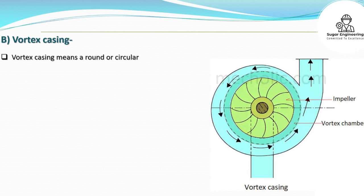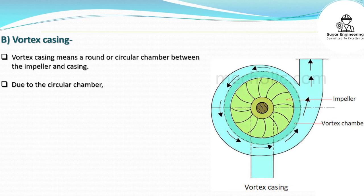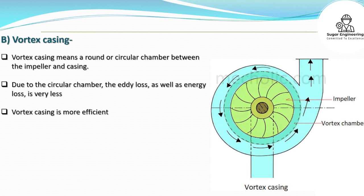B. Vortex casing: This means a round or circular chamber between the impeller and casing. Due to the circular chamber, eddy loss as well as energy loss is very less. Vortex casing is more efficient than volute casing.